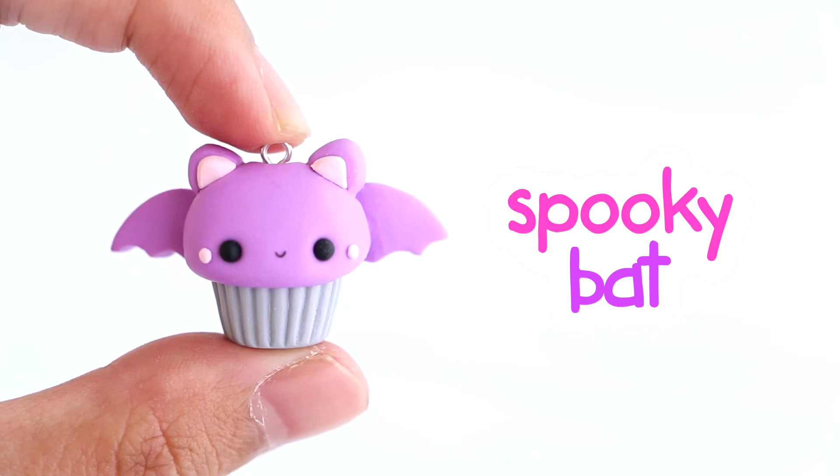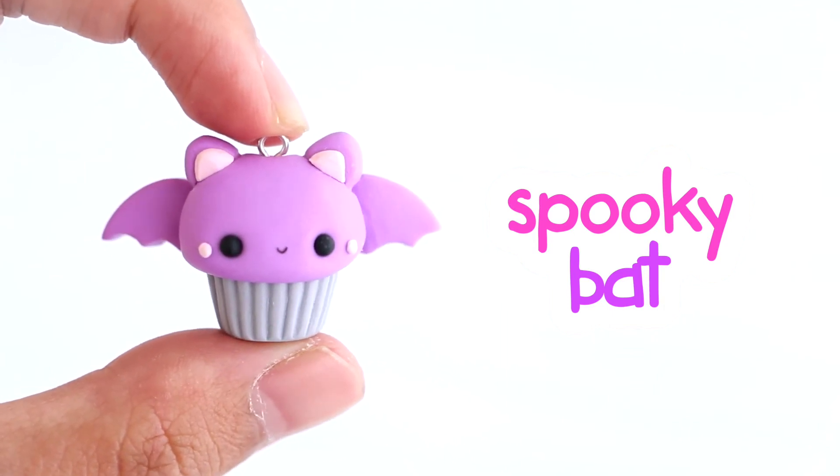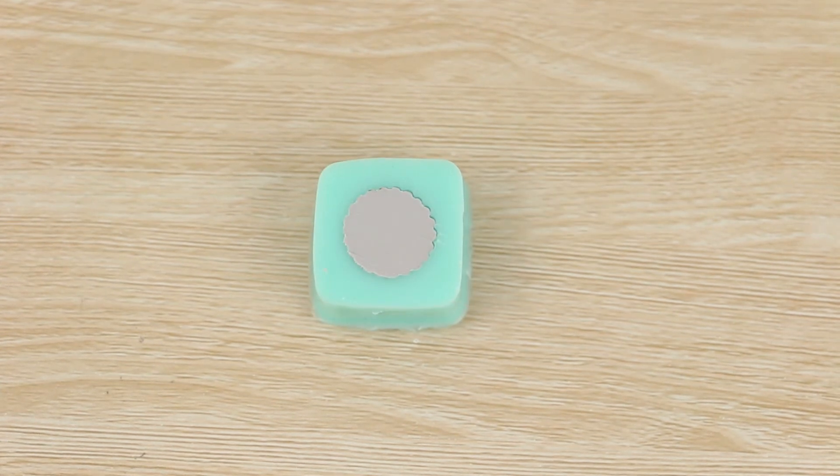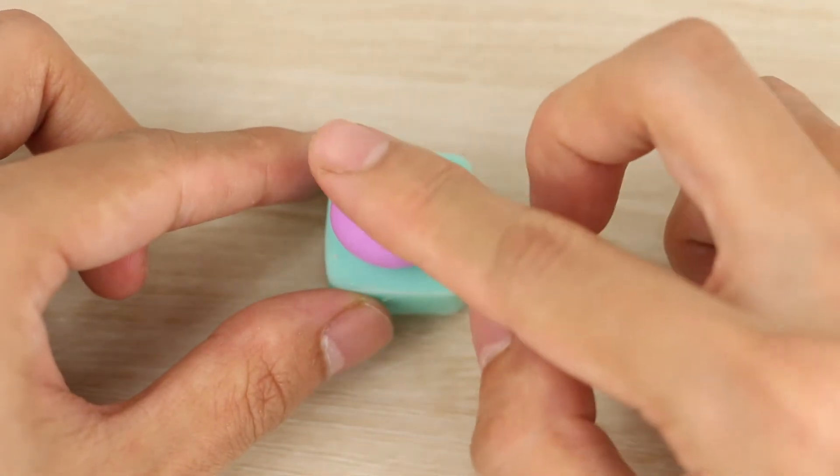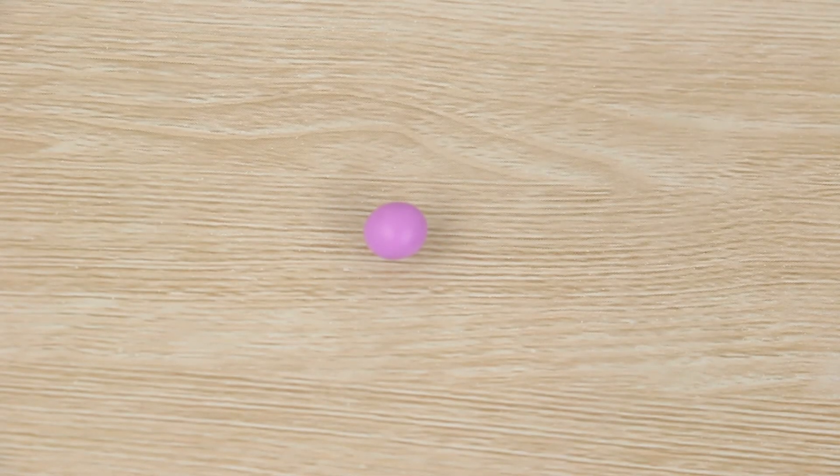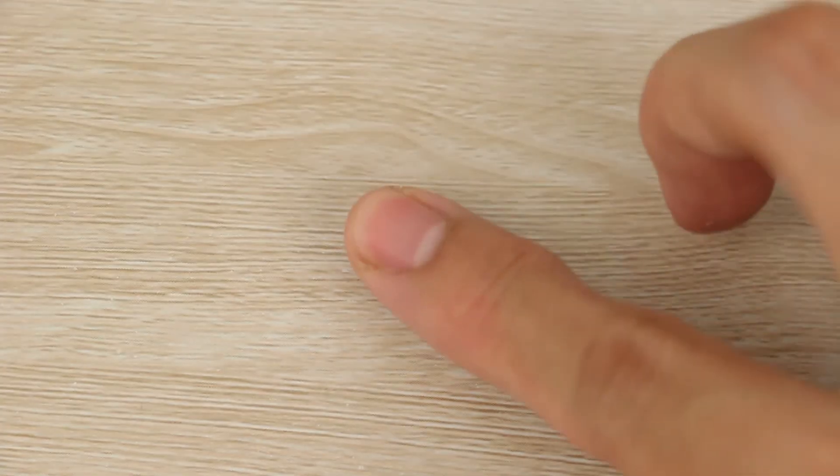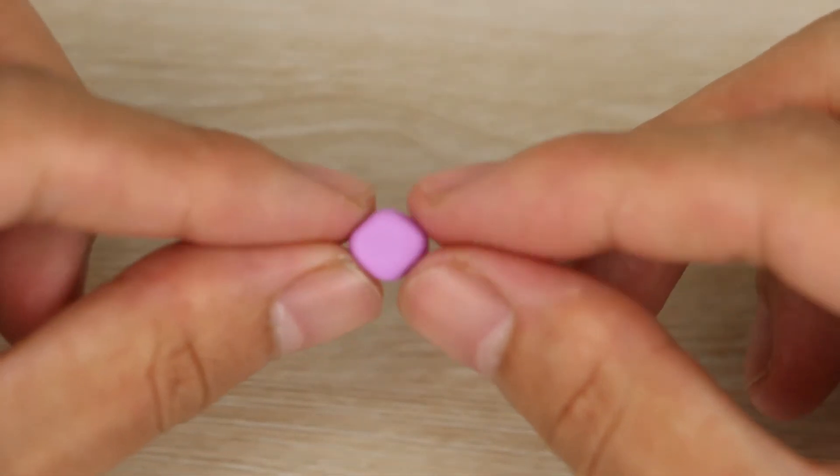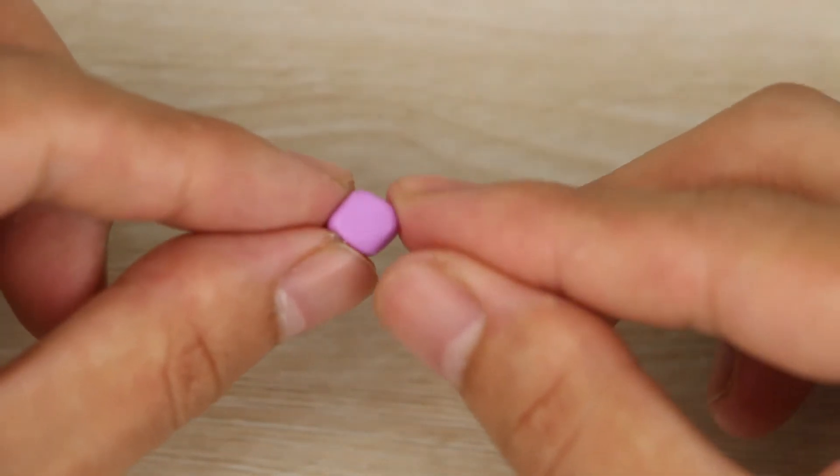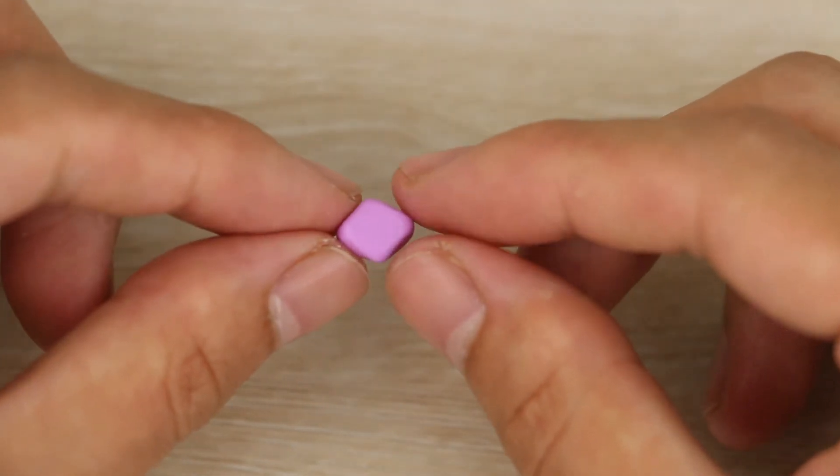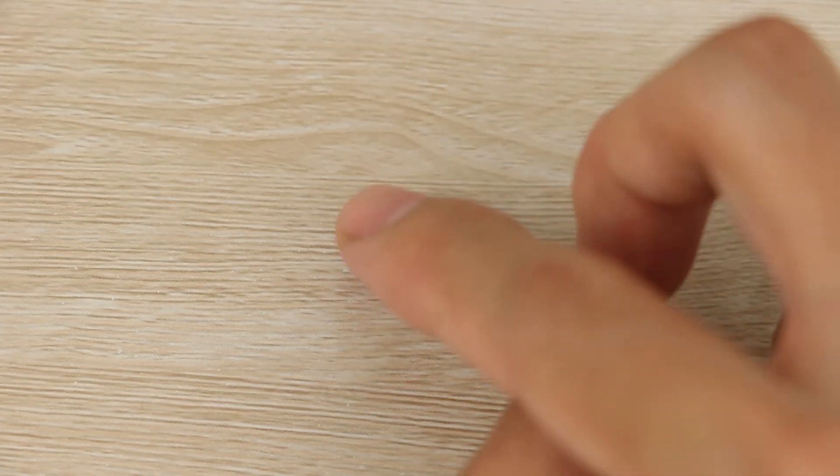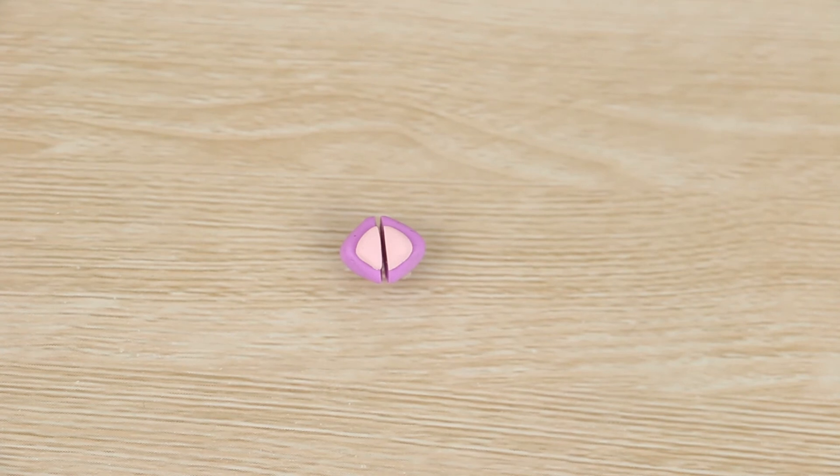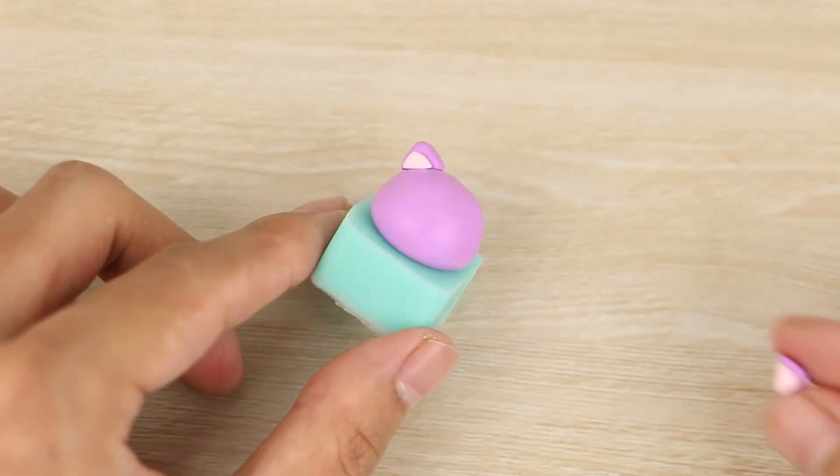Next up is a little bat cupcake. For the base color I'm using a dark gray and for the top a bright purple. Then to make the ears I'm flattening a small ball of the same purple just really lightly with my finger and then pinching both ends into a diamond shape. I've then made a smaller one in pink and I'm placing it on top of the purple one and cutting it in half to create two triangles. I'm placing those onto the head and smoothing the edges together with a needle tool.